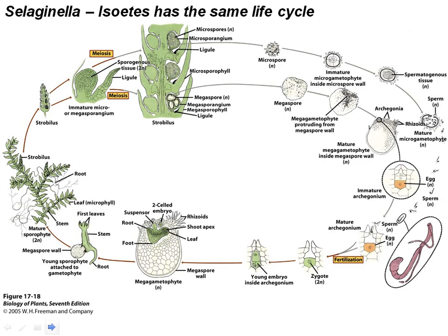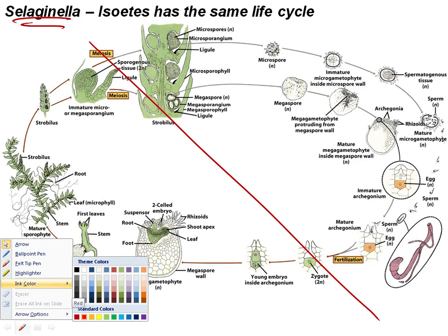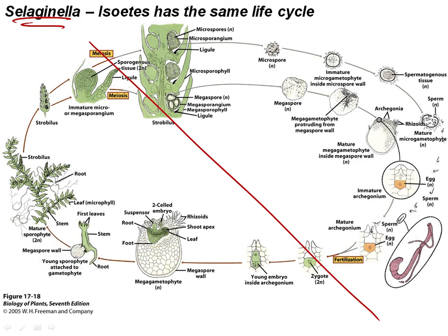Here is the life cycle of Selaginella — also the life cycle of Isoetes. Here's meiosis and here's fertilization. We can find the different spores. These spores are not drawn to size — the megaspore is much larger than the microspore, probably ten times larger than shown. So it's a really big difference between the sizes of the spores.